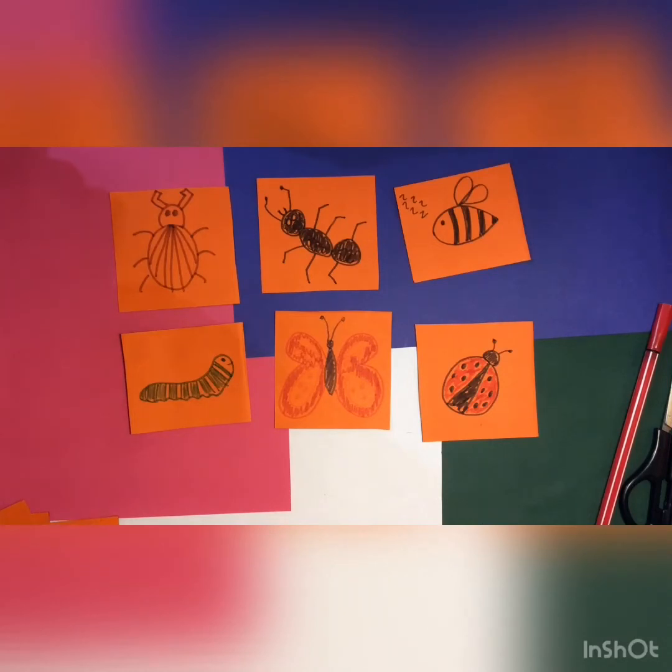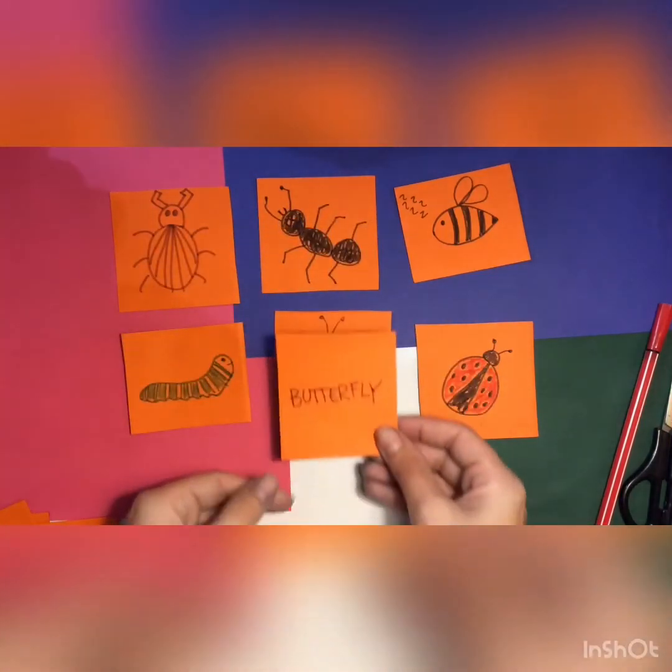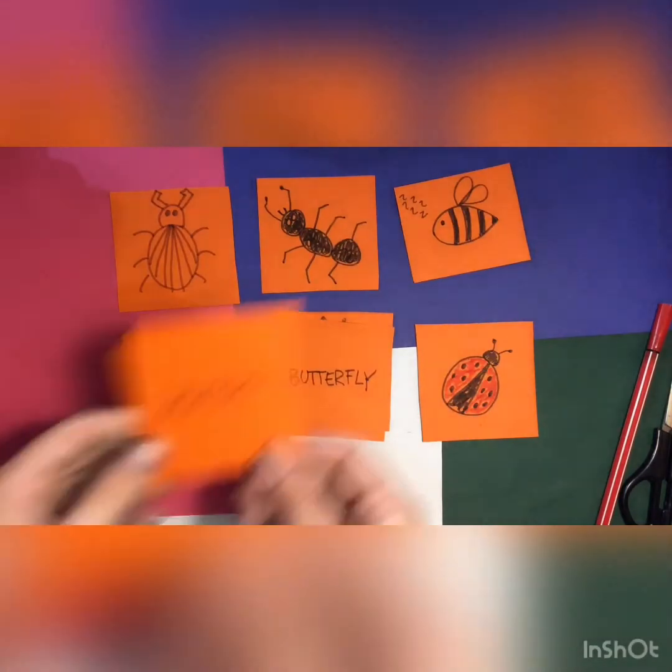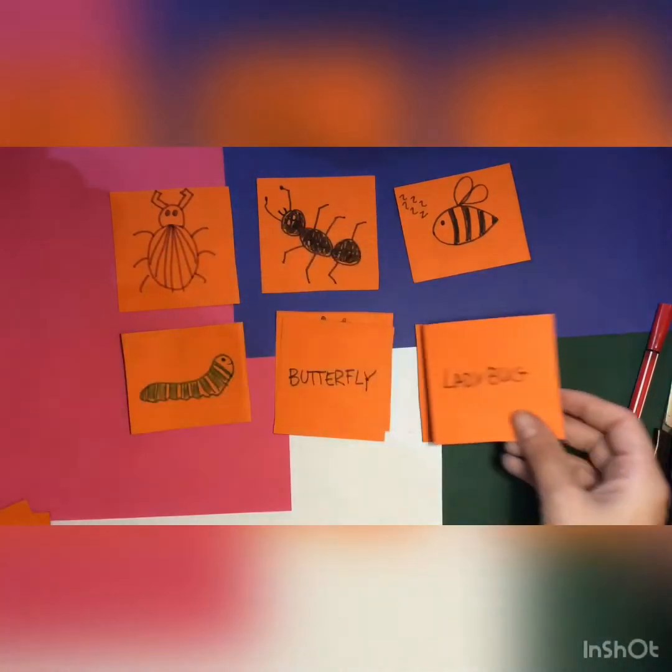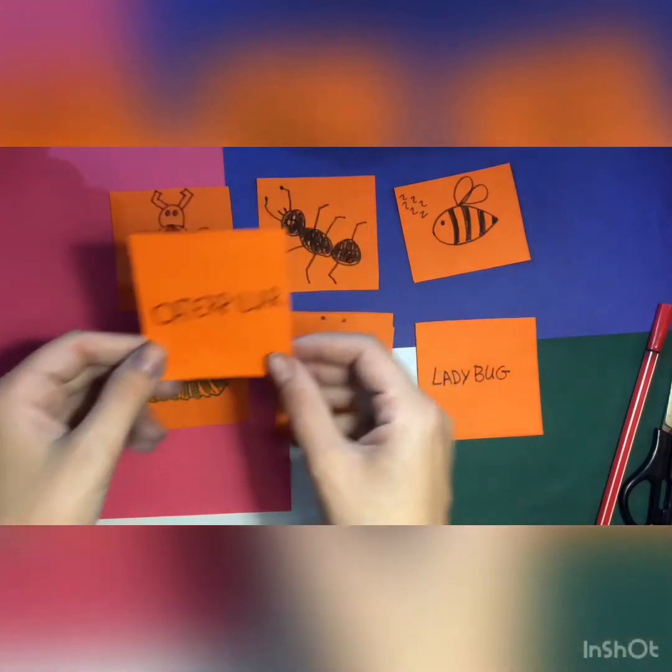Now let's find the matching pieces. So here we have the word butterfly. So we'll find the butterfly. It's here. This is ladybug. So here. Caterpillar. Here.